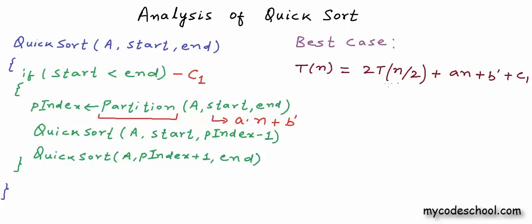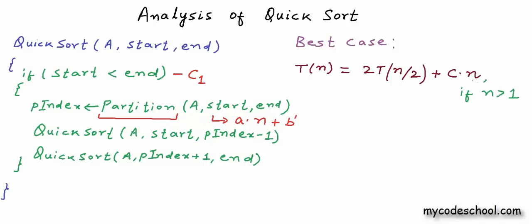So T(n) = 2·T(n/2) + c·n, where we ignore the smaller constant terms b' and c1 as they are negligible for large n. The base case is T(1) = c1 since we don't go inside the if-condition for a single element. This is the best case recurrence — it assumes all partitions across all recursive calls are balanced, splitting each segment into two equal halves.